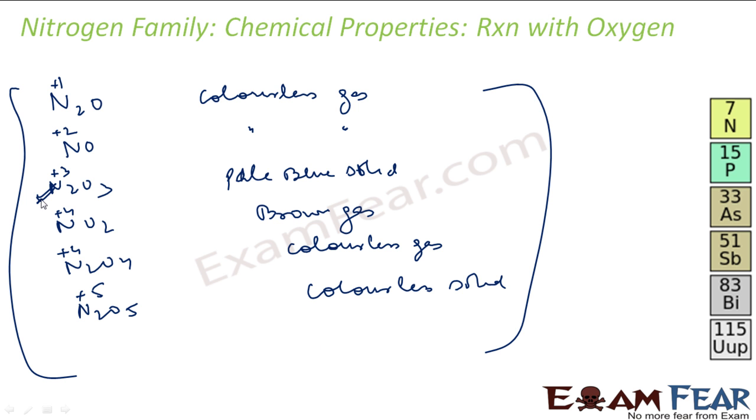N2O3 is pale blue solid. NO2 is brown gas. We have used this. You must have used this in the labs. And again, N2O5 is colorless solid, dinitrogen pentoxide. And others are all colorless gas.